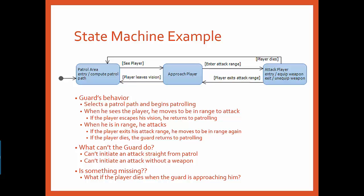When he sees the player, he transitions into the approach state where he moves into a position where he is close enough to fire at the player with some reasonable chance of success. Once the player is in range, the guard transitions into the attack player state where he equips his weapon and fires.